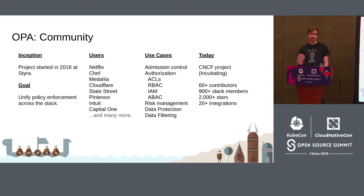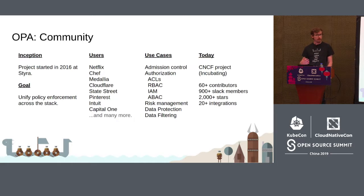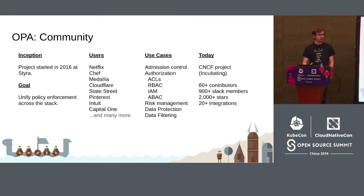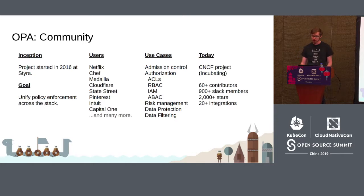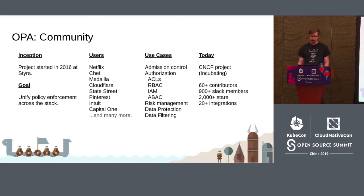Today, companies like Netflix use OPA to enforce access control over internal resources and internal microservice APIs. Companies like Chef are using OPA to deliver IAM capabilities in products they ship to customers. Dozens of companies like Medallia, Cloudflare, and State Street use OPA to enforce policies, guardrails, and constraints over their platforms and Kubernetes clusters. OPA is now a CNCF incubating project, promoted from sandbox in April. We have about 60 contributors, over 900 people on our Slack, over 2,000 stars, and over 20 integrations with cloud native ecosystem projects.